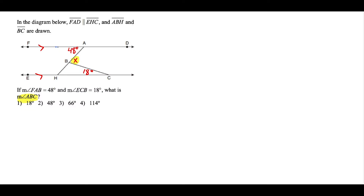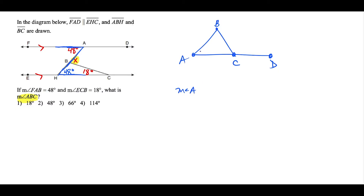We can use alternate interior angles: looking along the transversal connecting the parallel lines, if angle FAB is 48 degrees, then angle BHC is also 48 degrees. Even better, we can use the exterior angles theorem — which states that an exterior angle of a triangle equals the sum of the two non-adjacent interior angles. So X equals 48 degrees plus 18 degrees, giving us 66 degrees.